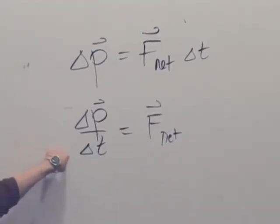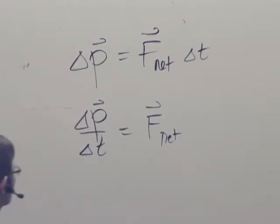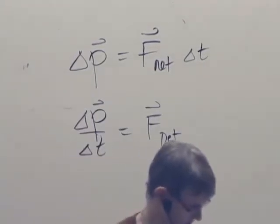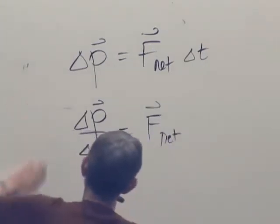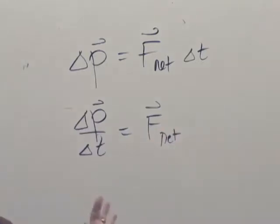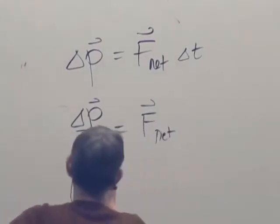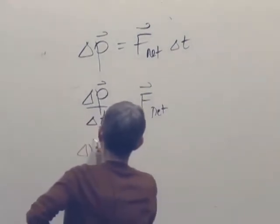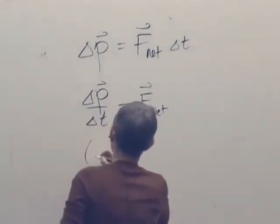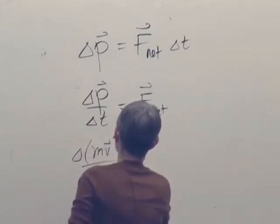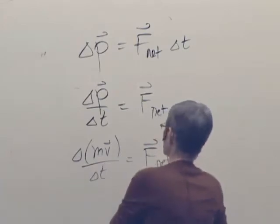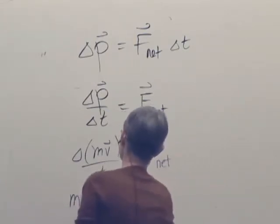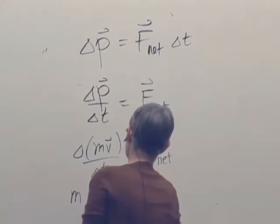Well if we take the limit here, what we've got is dP/dt. So, since in this case gamma is certainly very close to 1, what we have here is delta MV delta T is F net. Or since the mass isn't changing, we have to be a little careful, but in this case it's certainly not.